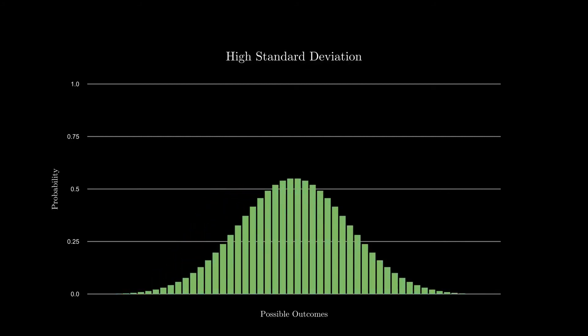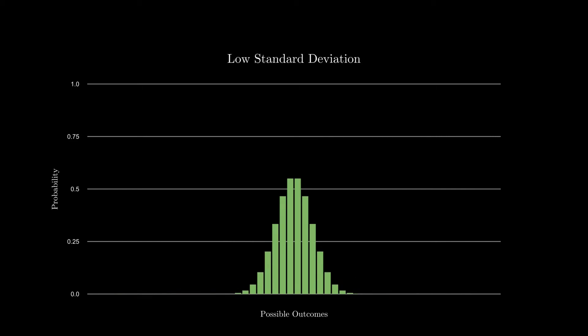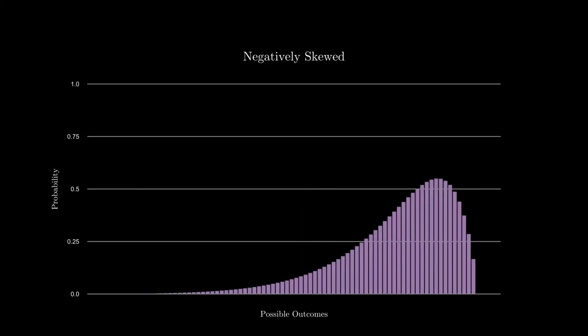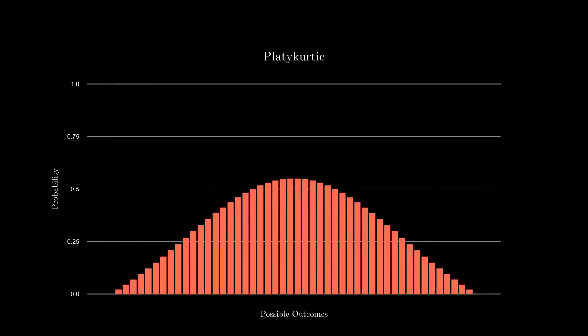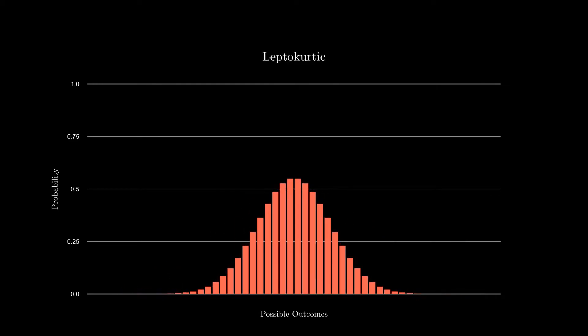Data can be spread out or concentrated in a distribution — concentrated on the right, which is negatively skewed, or to the left, which is positively skewed. There can also be outliers or few outliers in the data. For now we do not need to understand these terms, but those are the graphical representations of the probability distribution.